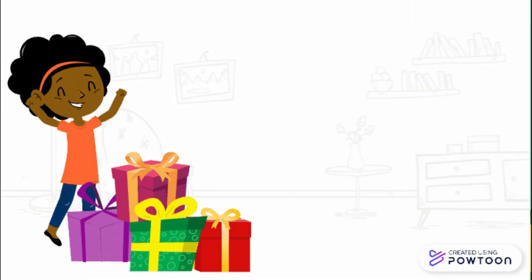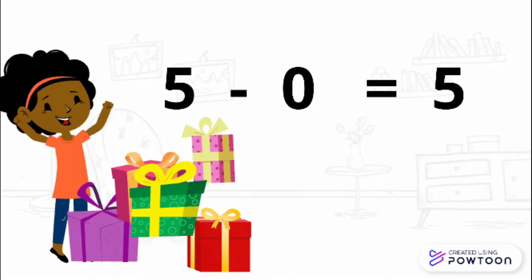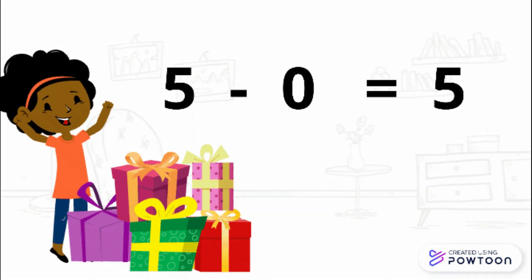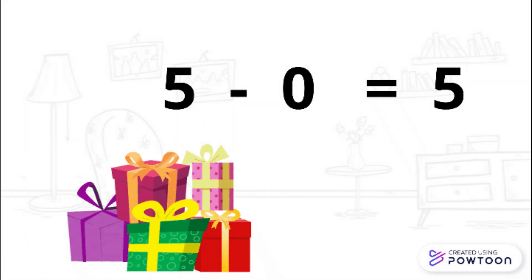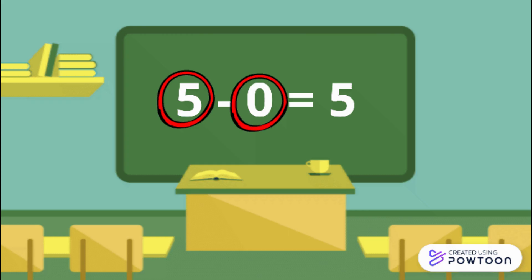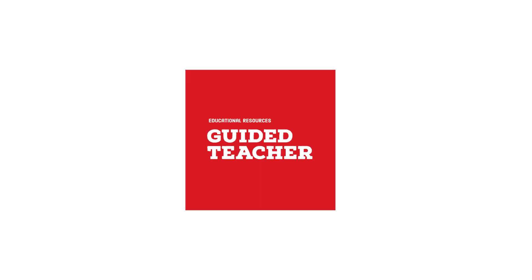We learned from Emily's example that when we subtract zero from a number, we are left with the whole number. So five minus zero equals five, because Emily did not give any of her presents to her sister, so she kept all of her presents. Five minus zero equals five.